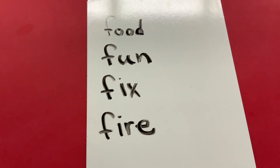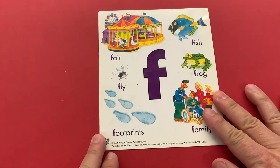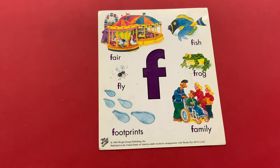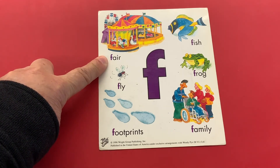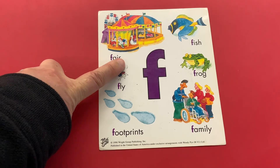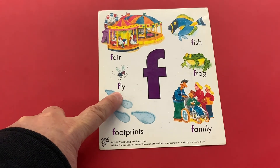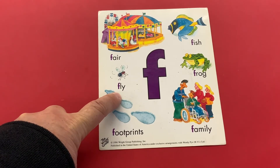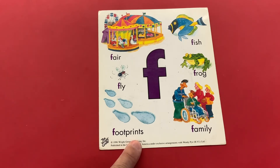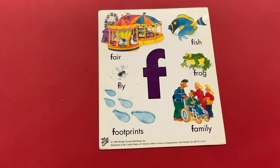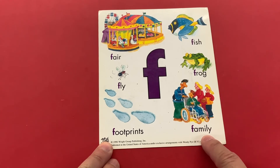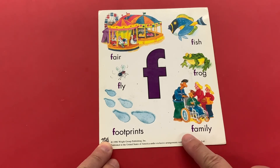These words begin with the sound F. Here are some more words that begin with the sound F. Over here we have the word fair — I bet you've been to the fair. This little insect is called a fly, so the word fly begins with the sound F. Right here is the word footprints — I hear the F at the beginning. We all have a family — did you hear the F sound at the beginning of this word?